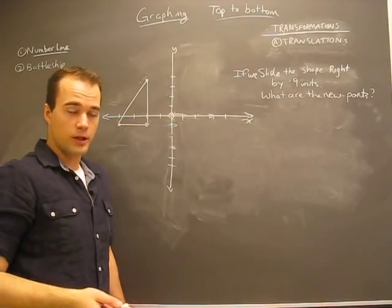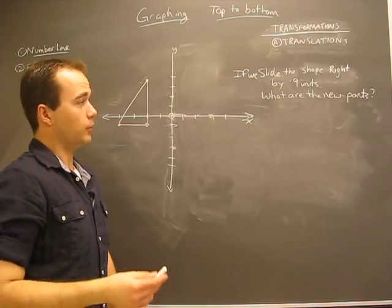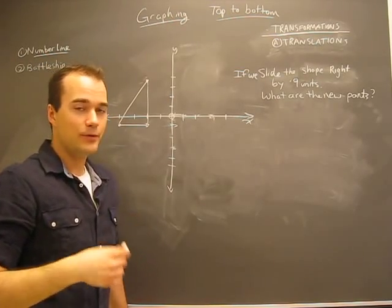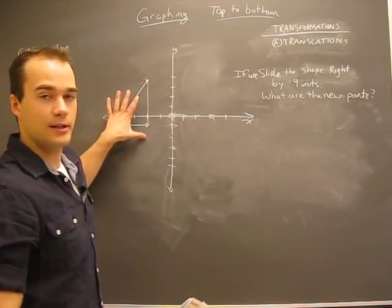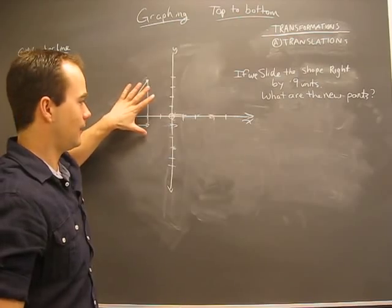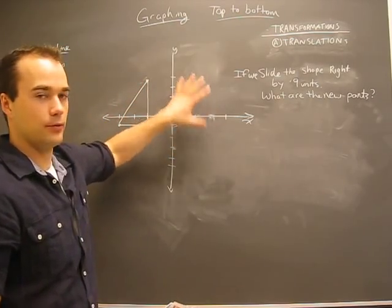Here's one more example of the transformation. We're going to do a type of transformation called translation, and what that means is we're going to slide something. It looks exactly the same, but we're going to move it down or left or right or whatever.